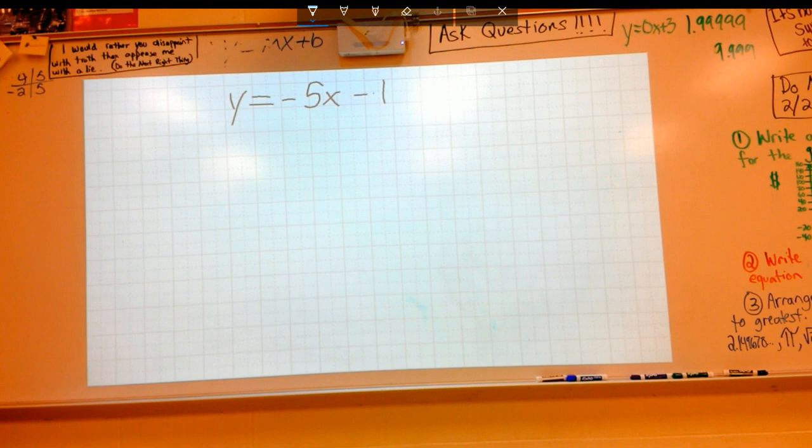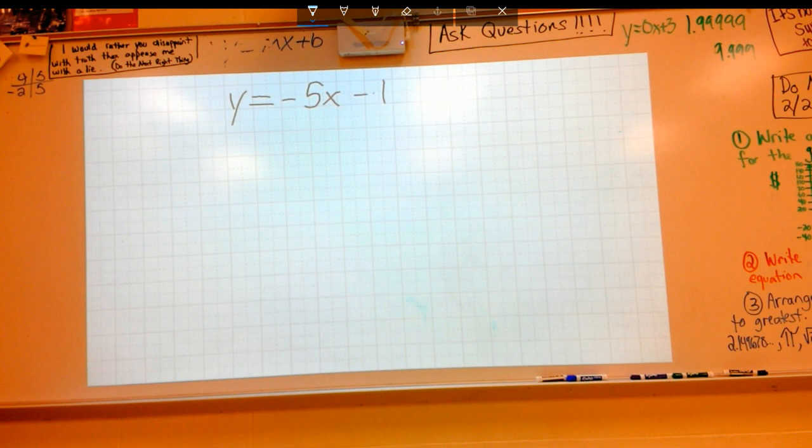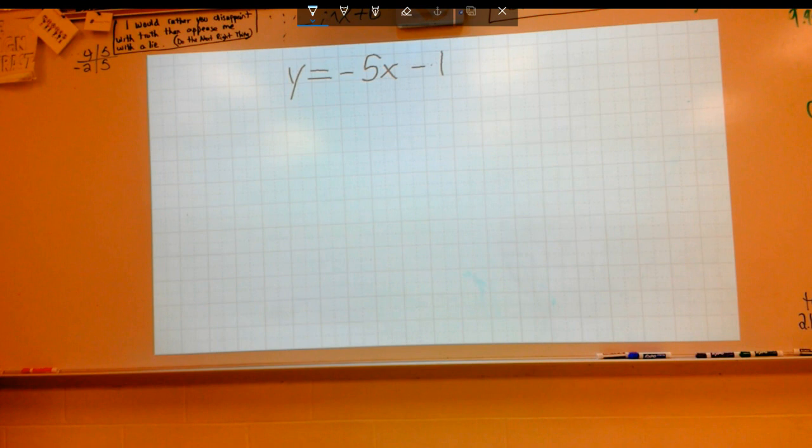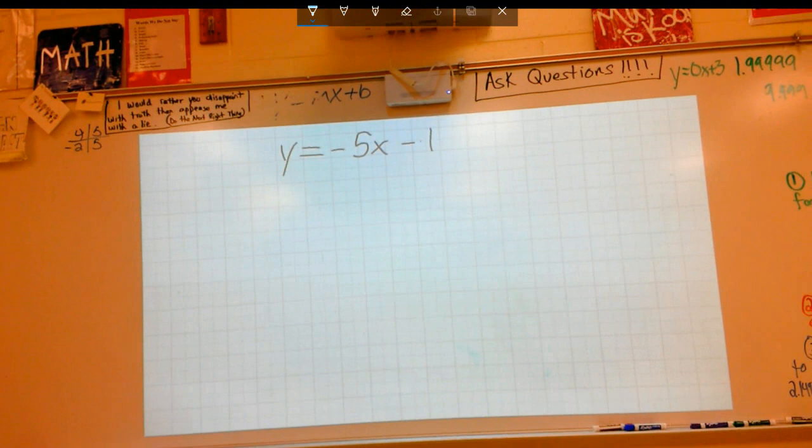All right, this one says write a table from the equation y equals negative 5x minus 1. Which number is that going to be on here? It says write a table or determine the table from the equation. A table from a graph, or writing a table from an equation. All right, so that one's number 5.